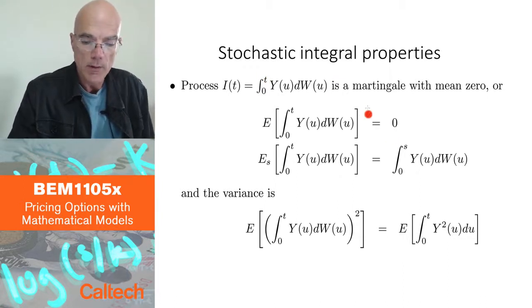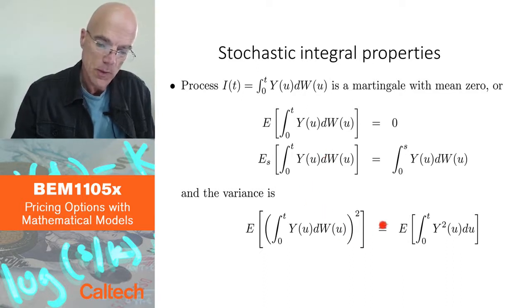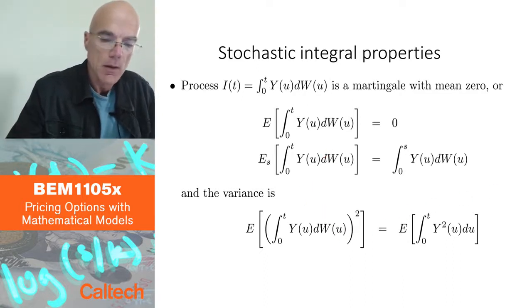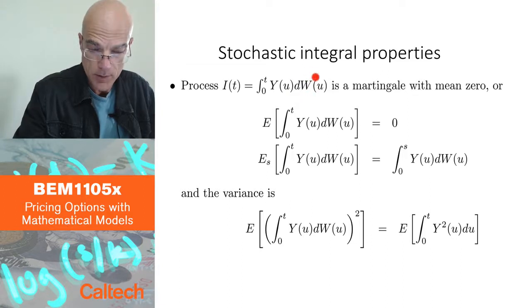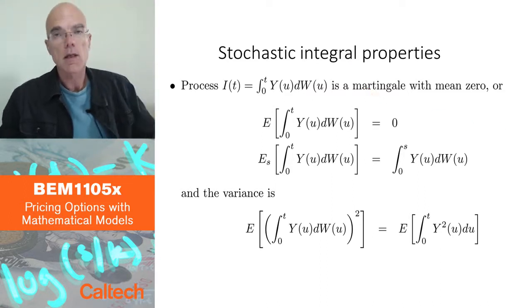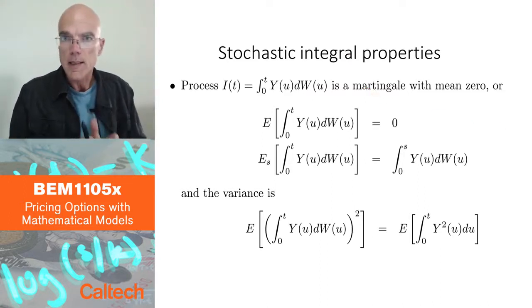Intuitively, before I go into the notation, what does this mean? From the finance point of view, it means W is a martingale. So it means if you are investing into a martingale price, which is a martingale, then your profits and losses are also a martingale. Your gains process is a martingale. This makes complete sense.